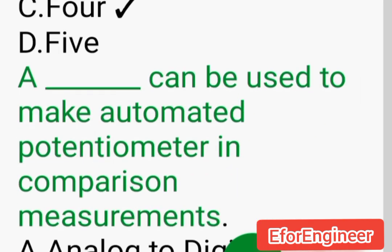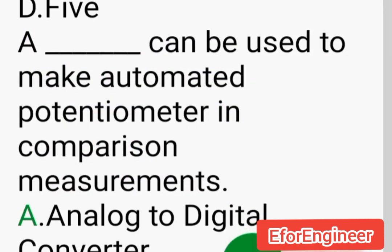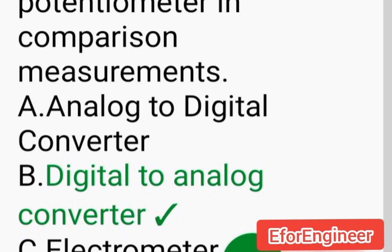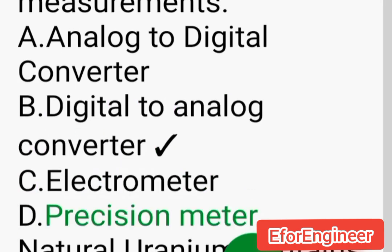___ can be used to make automated potentiometers in comparison measurements: A. Analog to digital converter, B. Digital to analog converter, C. Electrometer, D. Precision meter.